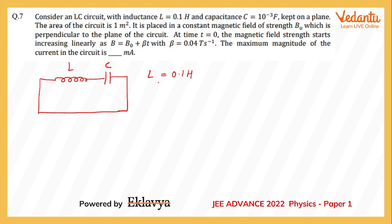Area of the circuit is given as 1 meter square. Now this circuit is present in a region of space where there is a magnetic field. The question doesn't say whether it's inward or outward, it simply says that it is perpendicular to the plane of the loop given to us. So let's assume that it is inward and this magnetic field is expressed as B naught plus beta t where beta equals 0.04 tesla per second.